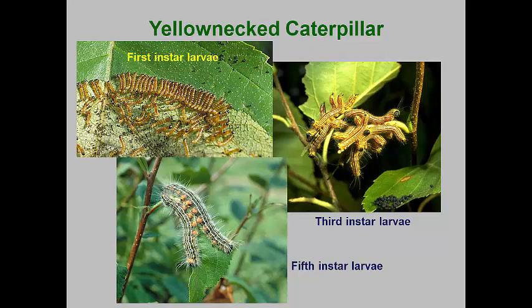In the last two instars, the larvae change color from red-orange with yellow stripes to having black bodies with yellow to white stripes. The later instar larvae often feed individually on leaves and each larva can consume several leaves per day. Once mature, the larvae drop to the ground to pupate and emerge as new adults the following summer.